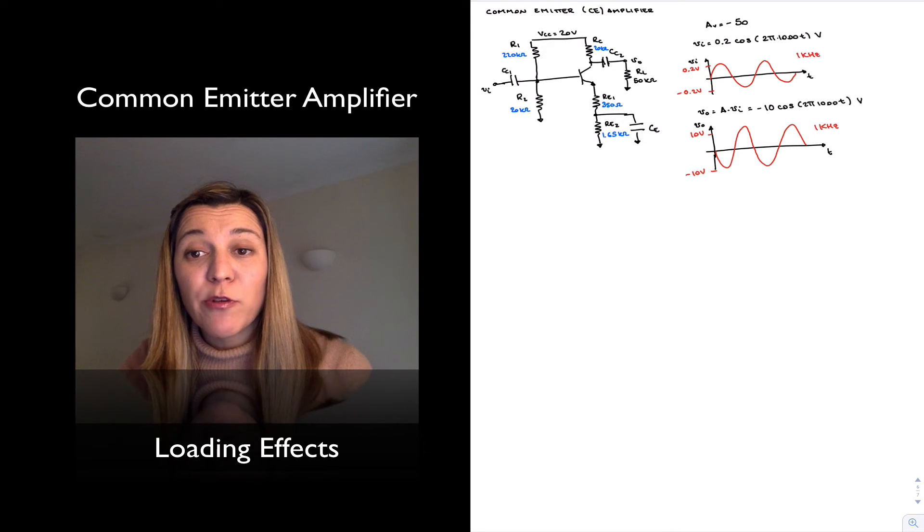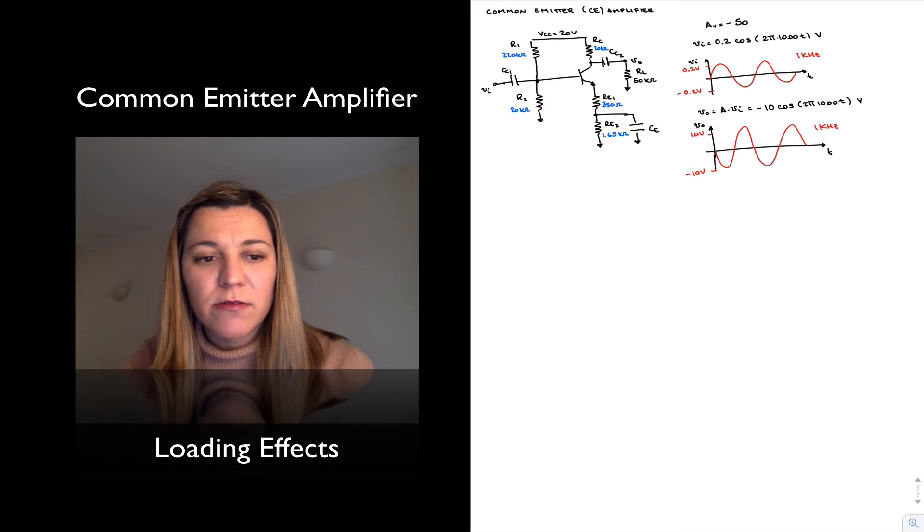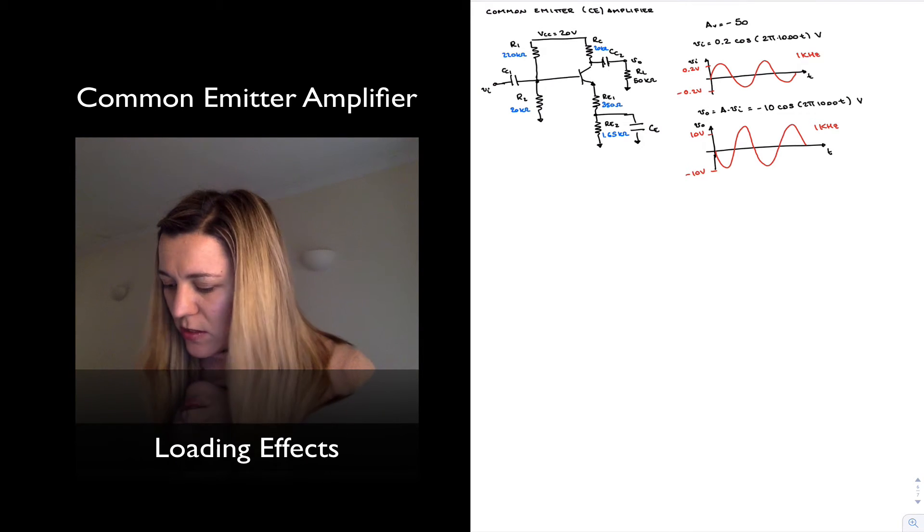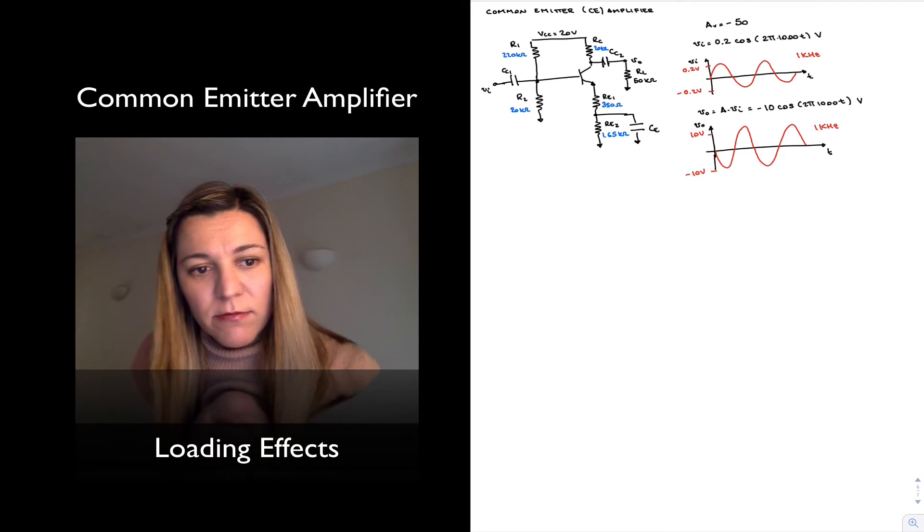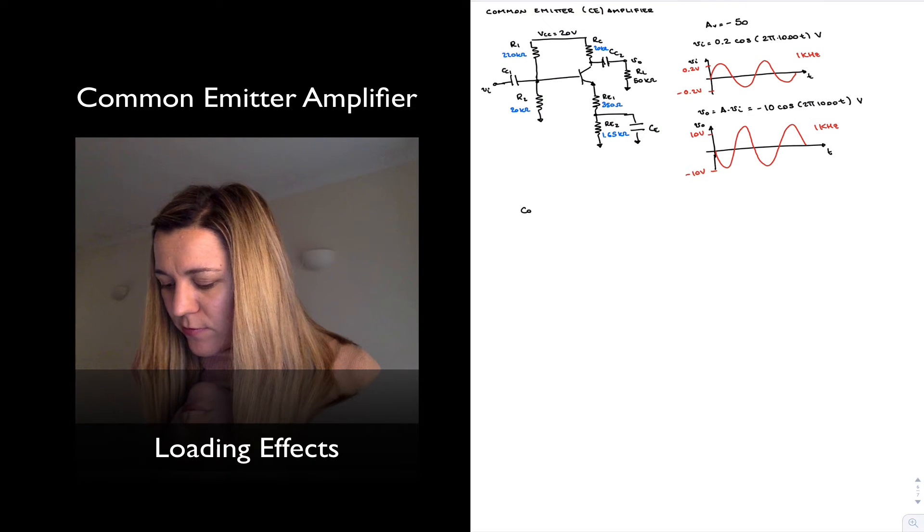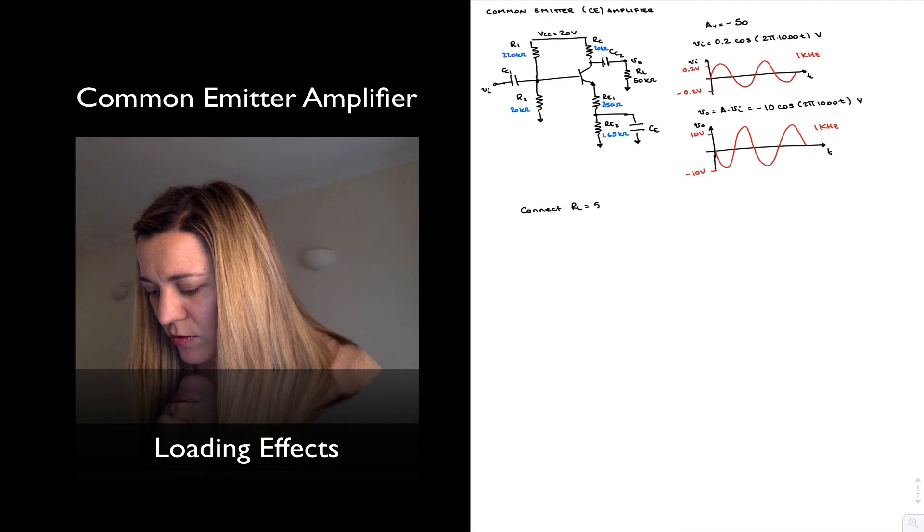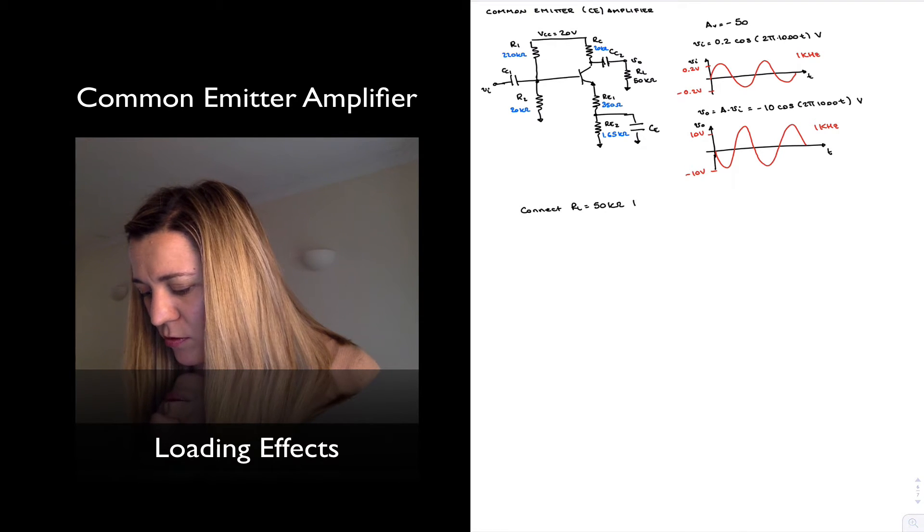How will my circuit performance change? How will the gain, effective gain of the circuit change? So let's imagine, connect RL equals 50 kilo ohms to the output of the circuit.